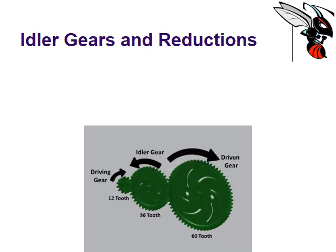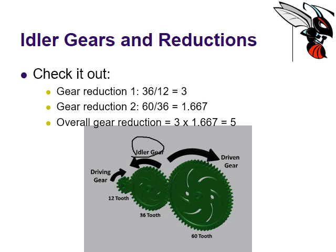Now here we've got a very similar setup, except with an idler gear in between. You've got a 12 tooth gear as the input gear, a 60 tooth gear as the output gear, but a 36 tooth gear in the middle. The gear reduction of the first set is 36 divided by 12, which equals three. Gear reduction number two is 60 divided by 36, which equals 1.667. Multiply those two together — a three reduction and a 1.667 reduction — and we still end up with a five overall reduction.